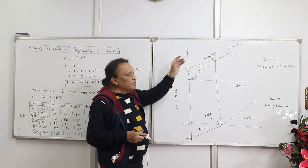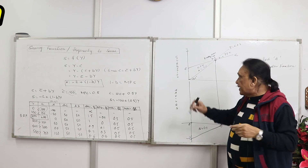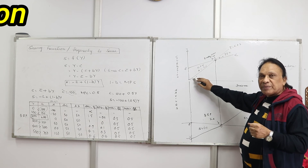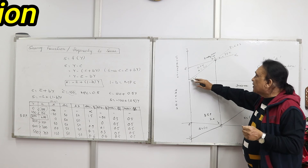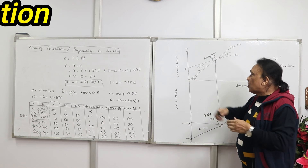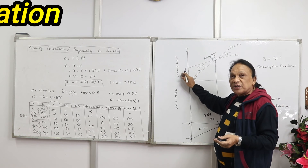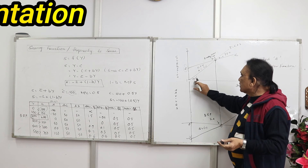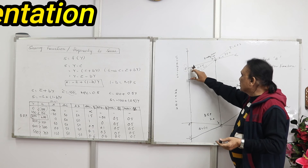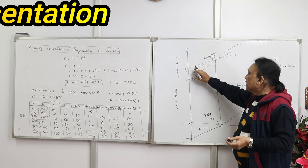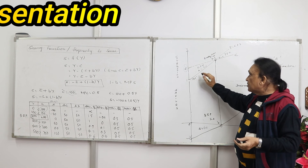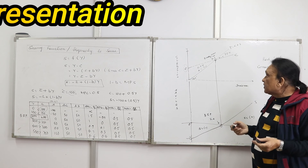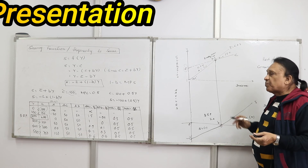Now let's derive the saving function from the consumption function graphically. On the x-axis we have income; on the y-axis we have consumption. There is a 45-degree guiding line called the income line, where Y = C + S at any point. The consumption function always starts from above zero because consumption can never be zero — that starting point is the autonomous consumption C̄. As income increases, consumption also increases. Initially the consumption curve is above the income line, so savings are negative.